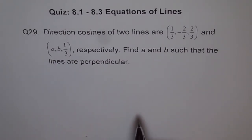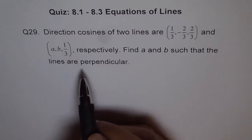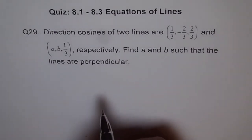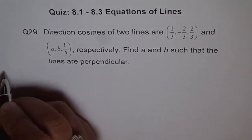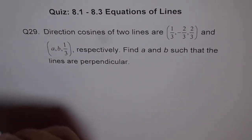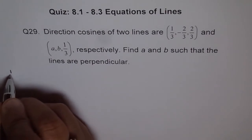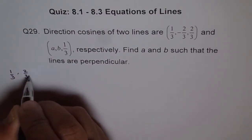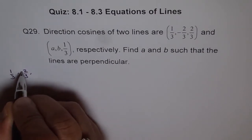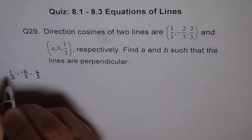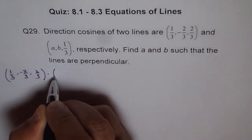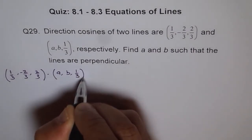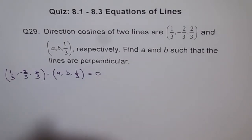Now, if the lines are perpendicular, then their dot product should be 0. So we'll start from there. We'll say (1/3, -2/3, 2/3) dot product with (A, B, 1/3) is equal to 0.